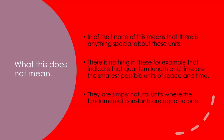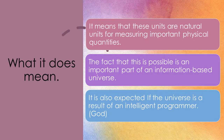So what does all this mean? In and of itself, none of this means that there is anything special about these units. There is nothing here that indicates that quantum length and time are the smallest possible units of space-time. They are simply natural units where the fundamental constants are equal to 1 — natural units for measuring important physical quantities. The fact that this is possible is an important part of an information-based universe and is also expected if the universe is a result of an intelligent programmer.